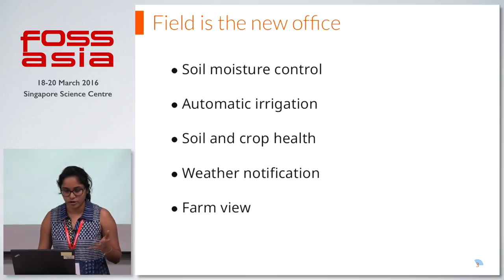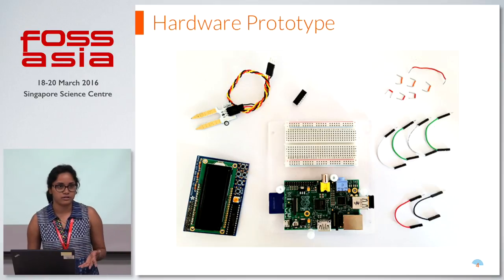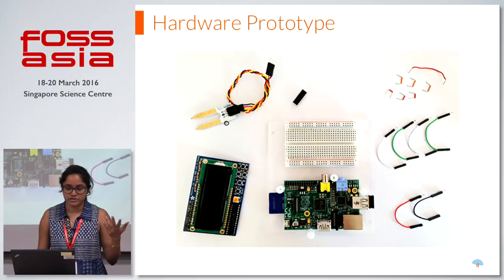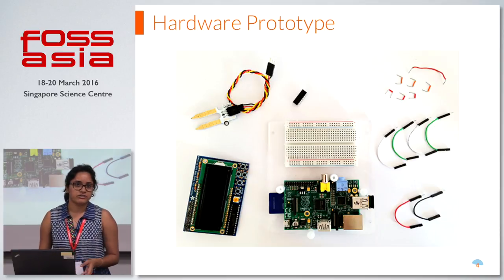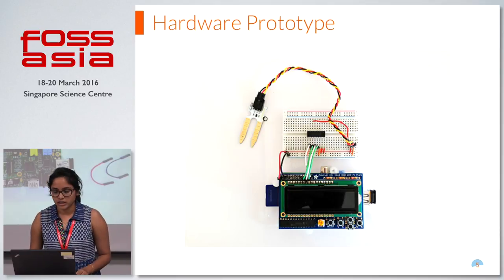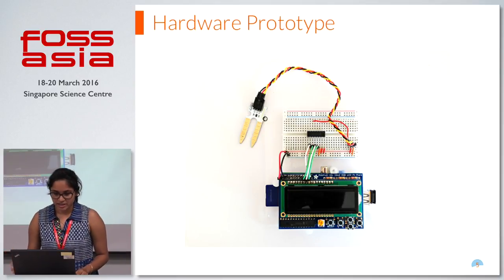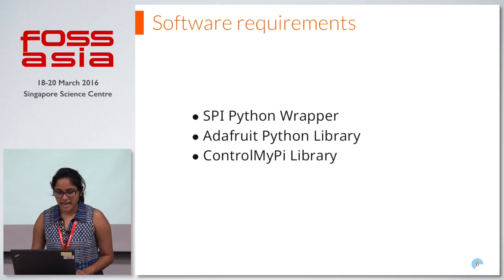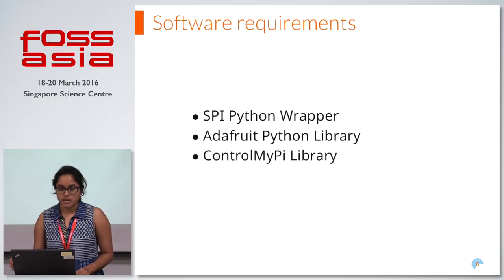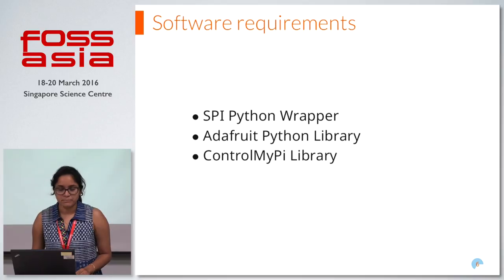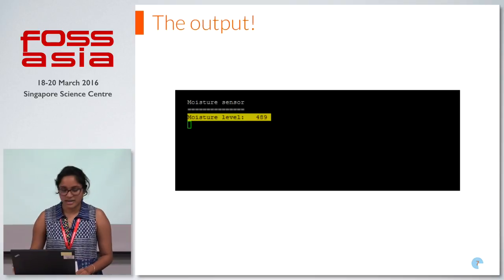I have worked on the soil moisture control system as of now. This is a hardware prototype. I have used Raspberry Pi model 2 and an MCP3008 ADC converter, along with female to male jumpers. The software requirements include an SPI Python wrapper to record data from the sensors, an Adafruit Python library for the LCD, and the RPi.GPIO library — used for displaying content on the UI as a control panel system.